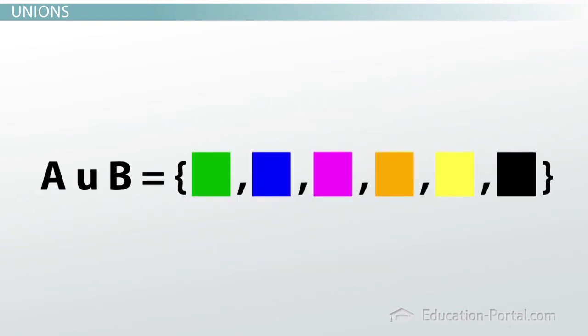How would that look using mathematical symbols? A union B equals green, blue, pink, orange, yellow, black.